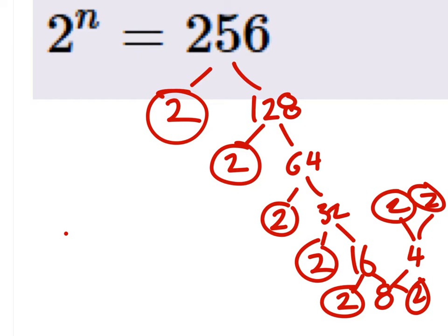But now I have 2 to the power of n equals 2 to the power of 1, 2, 3, 4, 5, 6, 7, 8. Sorry, I kind of had to curve it around there so it would fit on the screen. But I circled all the 2s. So 2 to the power of 8.